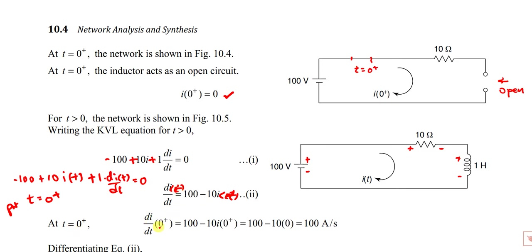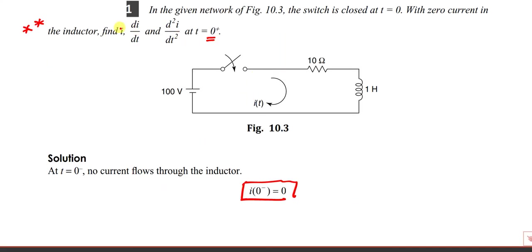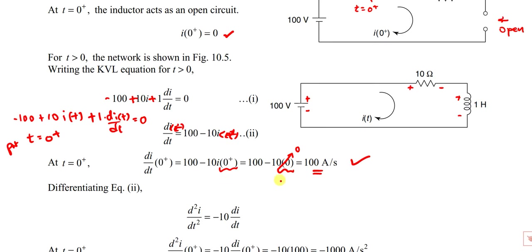So di/dt at t = 0⁺ is 100 amperes per second. Now we need d²i/dt². To find it, differentiate the KVL equation once more. Differentiating −100 + 10i(t) + di/dt = 0 gives: 10·di/dt + d²i/dt² = 0. Therefore d²i/dt² = −10·di/dt. At t = 0⁺, substitute di/dt|₀₊ = 100.